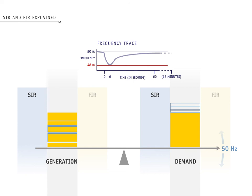Now that the FIR and SIR have restored the balance, generation is re-dispatched to release the SIR after 15 minutes, and the return of the interruptible load then follows.